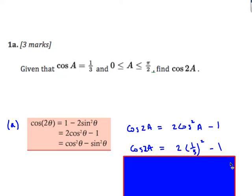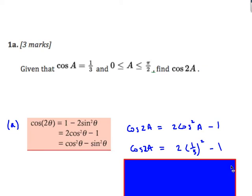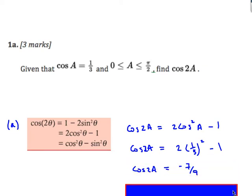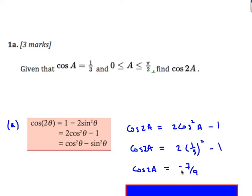So substituting in: cos θ is 1/3, put it into the formula. Cos 2a = 2×(1/3)² − 1 = −7/9. That's the first one.